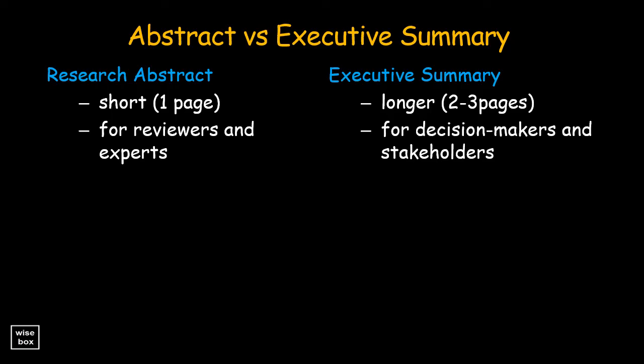The purpose of an abstract is to inform and intrigue the reviewers to read the full proposal, while the purpose of an executive summary is to persuade and impress the decision makers and stakeholders.